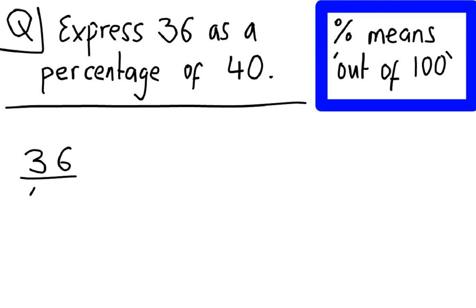36 out of 40. Now before we were using 20 as the denominator, and that went nicely into 100. There is no integer, by integer I mean whole number, that we can multiply 40 by to get over 100. So in these types of questions, there is going to be an additional step.